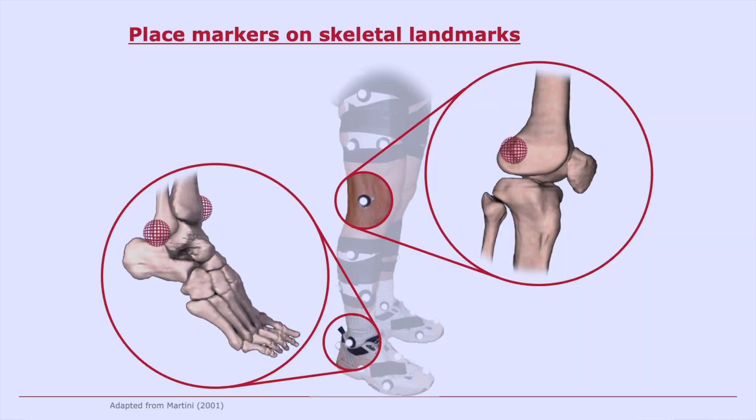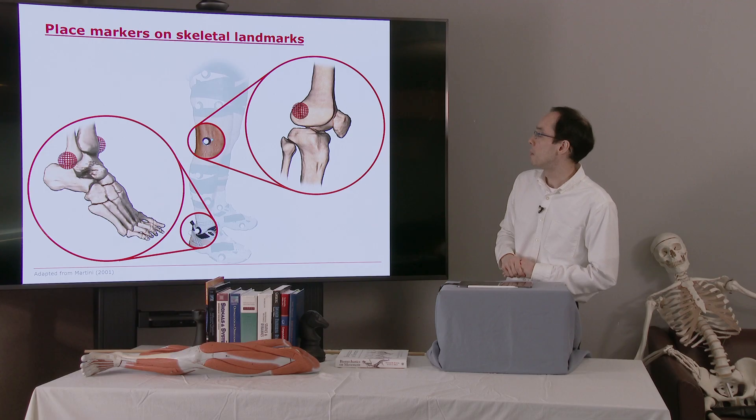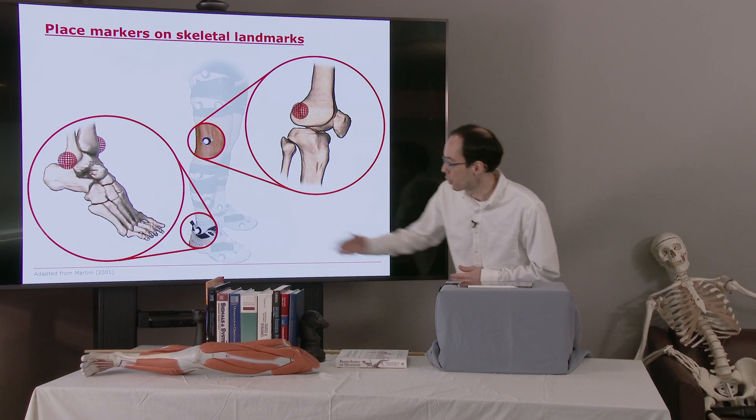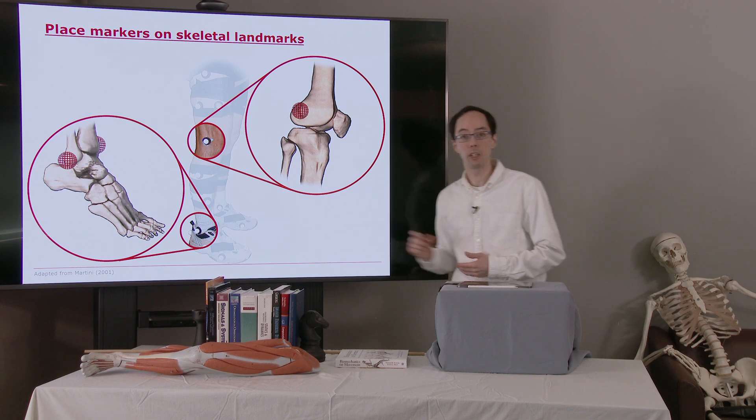For example, as shown here, we have a marker on the femoral epicondyle. It's very easy to palpate, you can feel it on the side of your knee, so that's a good location. Another good location down at the ankle, the malleoli.